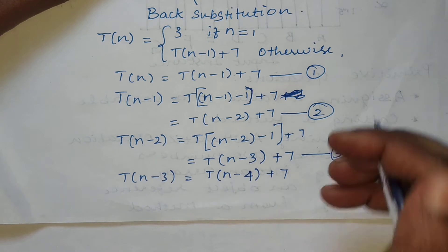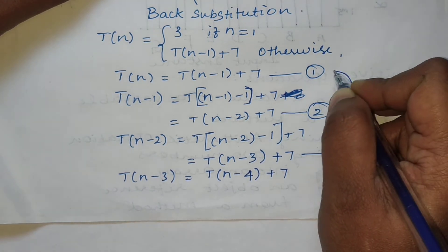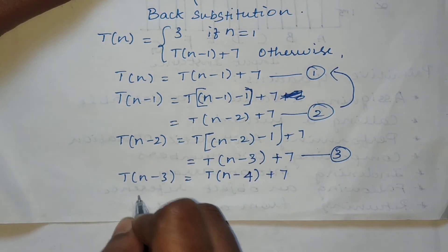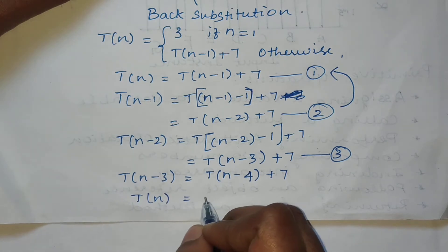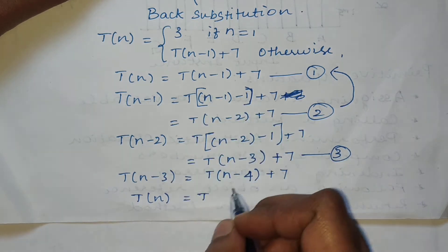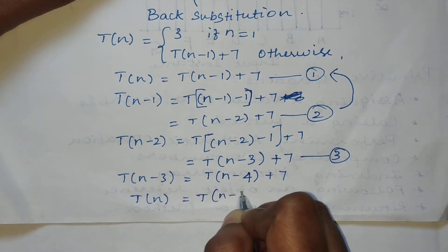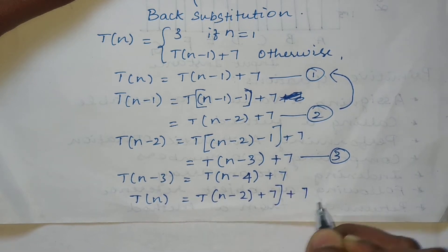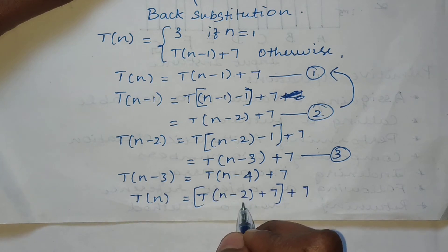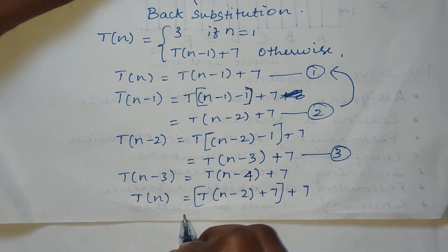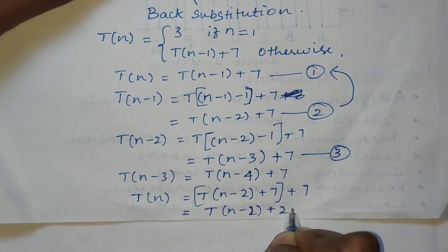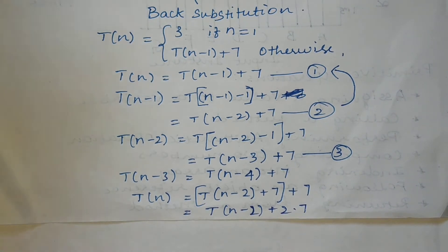Now we substitute equation 2 into equation 1. T(n) = T(n-1), and the value of T(n-1) is T(n-2) + 7, plus the existing + 7, giving us T(n) = T(n-2) + 2×7.